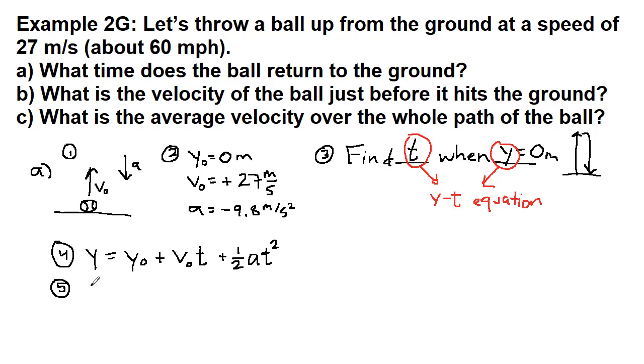So step five, we plug in the numbers. The final height is zero. The initial height was zero. You have a positive 27 times t plus one-half times negative 9.8 times t squared. So let's simplify this. We have zero equals 27t minus 4.9t squared. Now, at this point, you may think to yourself that that's something that you haven't had much practice with or algebra is really rusty and you don't know what to do next. And I want to make sure that we know what to do next.